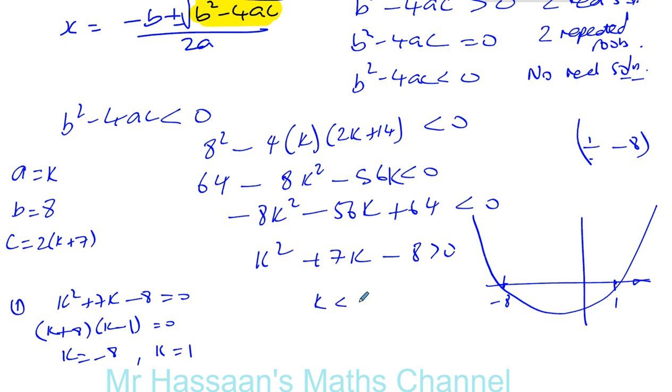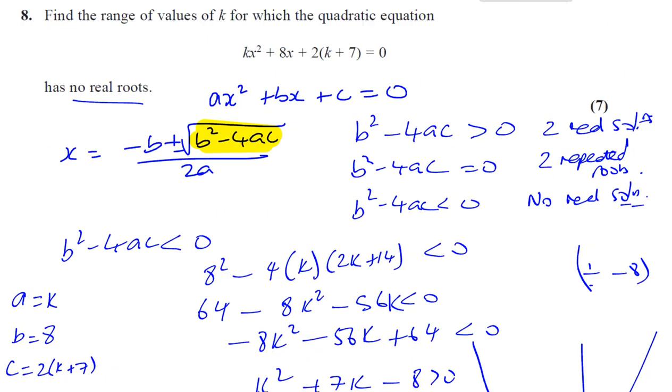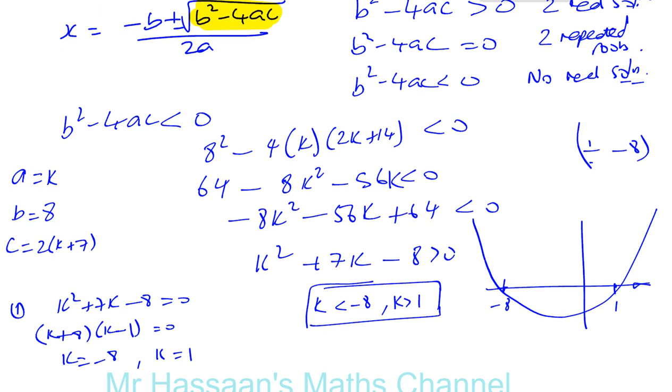When k is less than minus 8 and k is greater than 1. And those are the solutions to this problem. When k is less than minus 8 and when k is greater than 1. Those are the range of values of k for which this has no solution. So that's question number 8 answered for you.